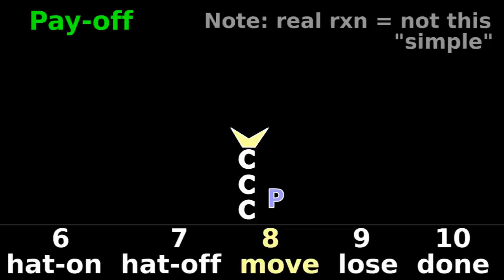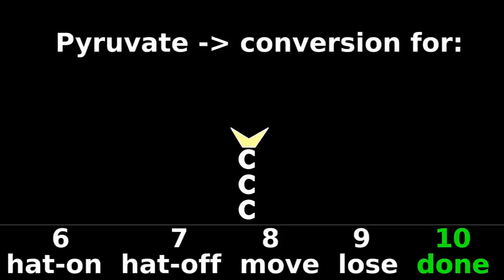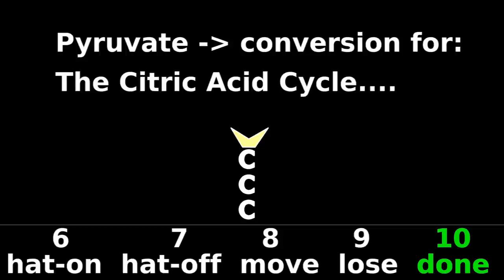8. Move the phosphate from the butt to the middle, and now there's an OH on the butt. 9. Lose that OH from the butt. 10. Use that middle phosphate to make our last ATP, leaving pyruvate to be converted for the next part of cellular respiration, the citric acid cycle.